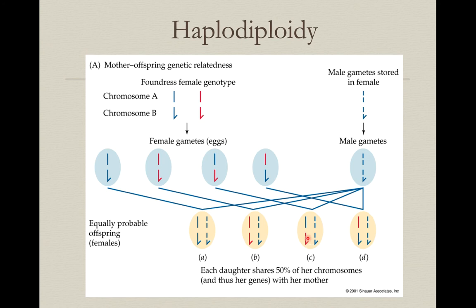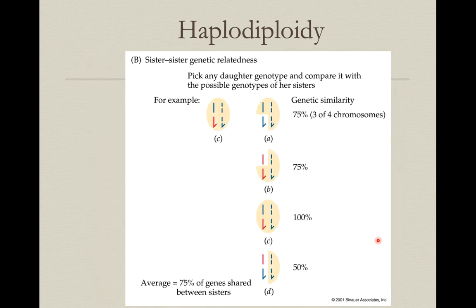The eggs vary depending on the female contribution — which of these eggs was used. But they're guaranteed to be related to each other by 50% just from the male alone. If we pick one of these eggs at random and calculate the average relatedness among all four eggs, the right side — from dad — is always the same: always 50%.